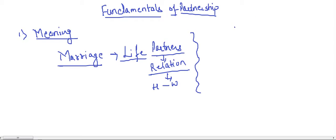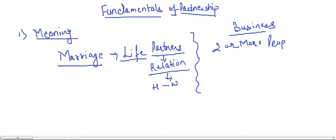Similarly, we have for the business. In marriage we have only two persons very often, but in business, when two or more people join hands and get related, they are called the partners. Like in marriage we have life partners — a relation established between two people, a relation of a husband and a wife — similarly, in business, when two or more people join hands, they are called the partners.